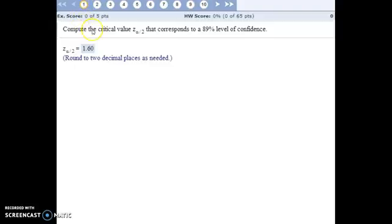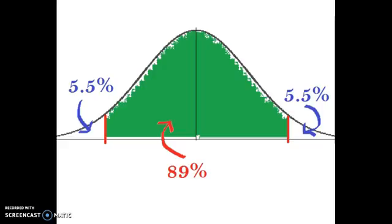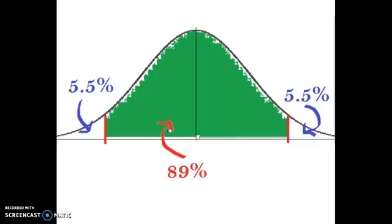For number one, we're trying to compute the critical value that corresponds to an 89% level of confidence. What that looks like graphically is we're trying to find these values so that 89% of the normal distribution is in between those two values. And because the normal distribution is symmetric, whatever this value is, just the opposite — the negative of that — will be this value.